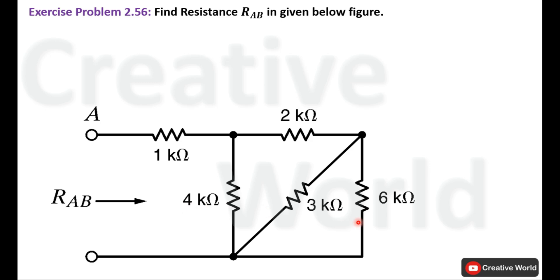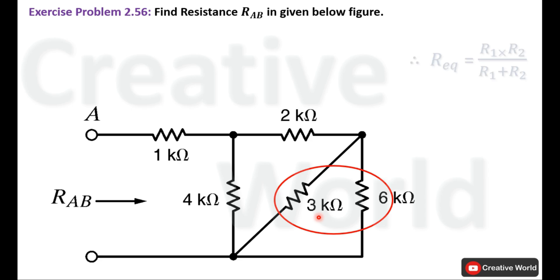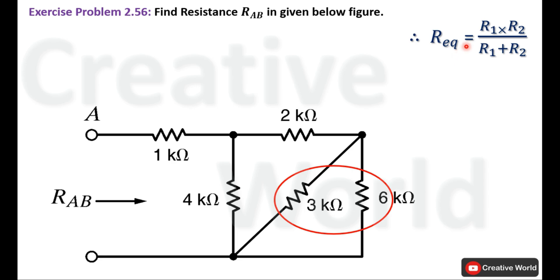First of all, we will start from the 6 kΩ and 3 kΩ resistances. Both of these are connected in parallel connection, so we will find their equivalent resistance using the formula R equivalent equal to the product of both parallel connected resistances dividing by their sum.